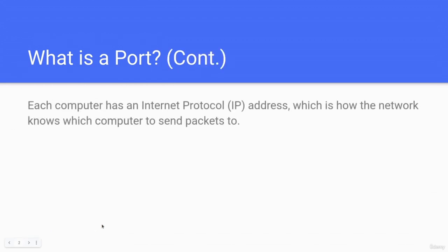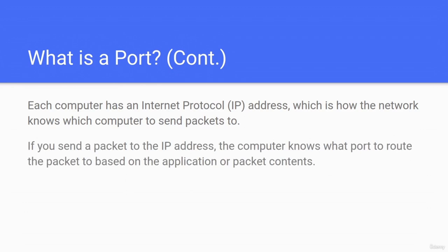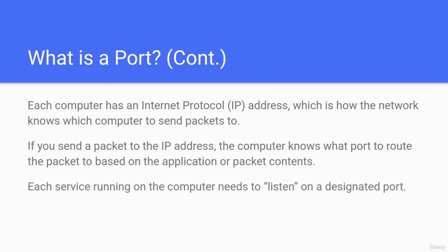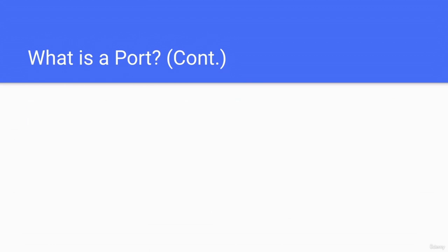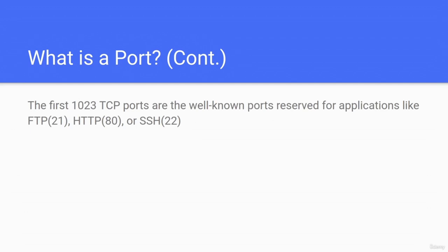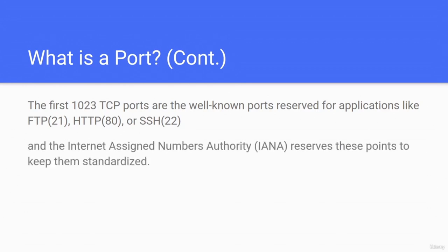Each computer has an Internet Protocol address — the IP address — which is how the network knows which computer to send packets to. If you send a packet to the IP address, the computer knows which port to route the packet to based on the application or packet contents. Each service running on the computer needs to listen on a designated port. The first 1,023 TCP ports are the well-known ports reserved for applications like FTP on 21, HTTP on 80, SSH on 22.